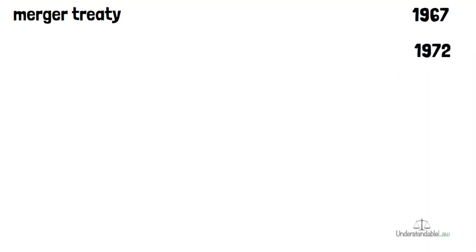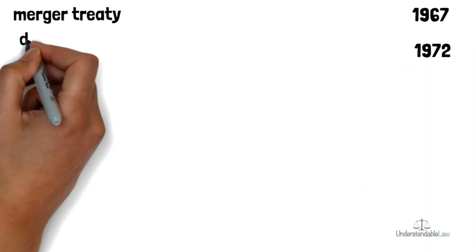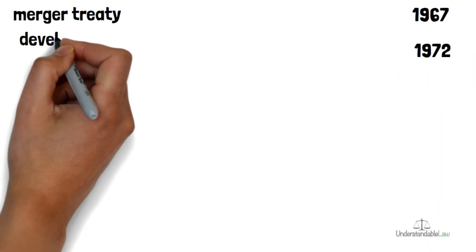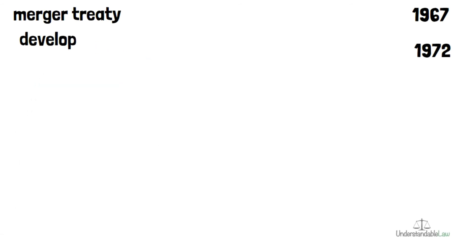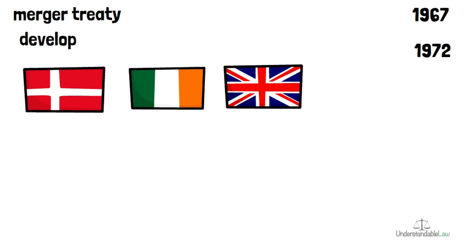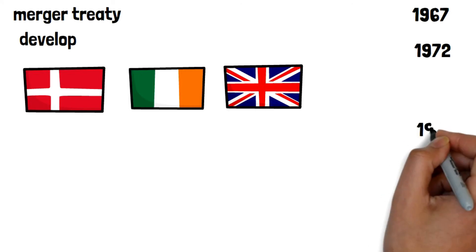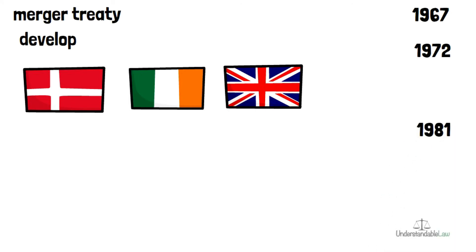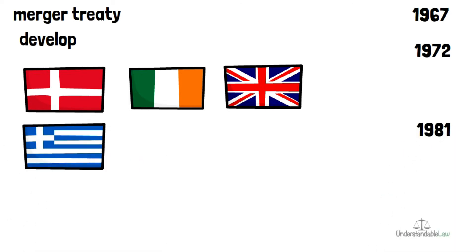A few years later in 1972, the community continued to develop and more states joined, like Denmark, Ireland and the United Kingdom. Greece joined in 1981 and Spain and Portugal in 1985.